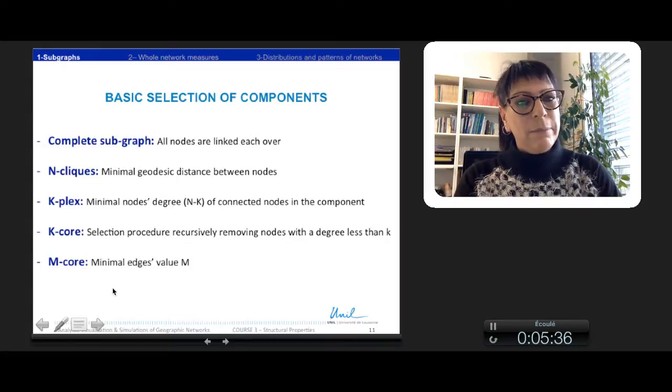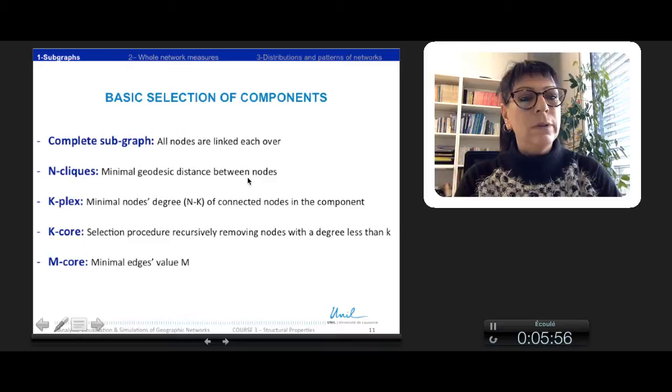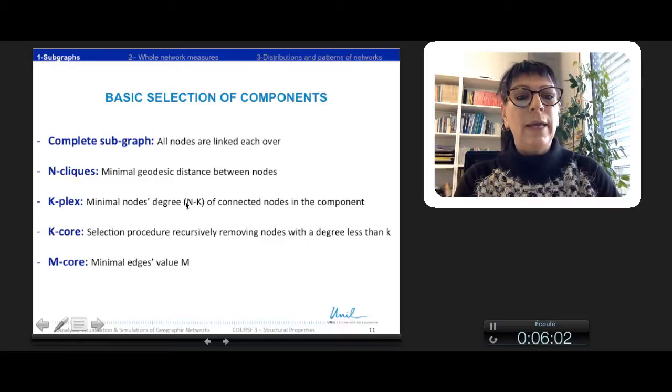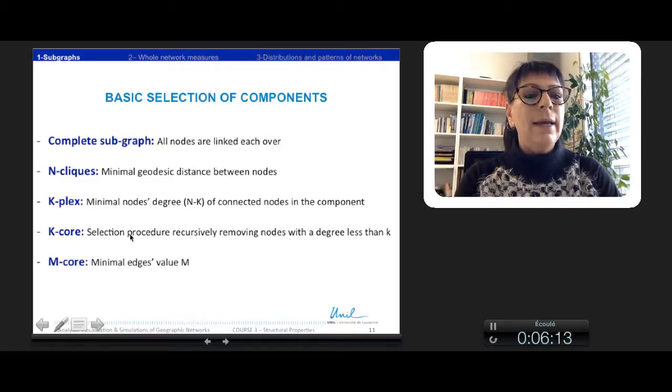In this part, we saw several basic selection of components. First, the complete subgraph with all nodes are linked to each other, so it is really very dense. N-click, we relax the condition with the minimal geodesic distance between nodes. K-Plex, we relax the condition with a minimal degree of the nodes N-K. The K-Core, we operate a selection procedure recursively removing nodes with a degree less than K. And M-core, we select on the minimal edge value.